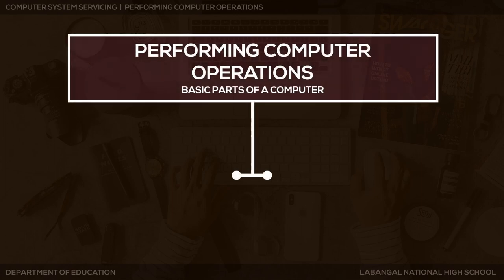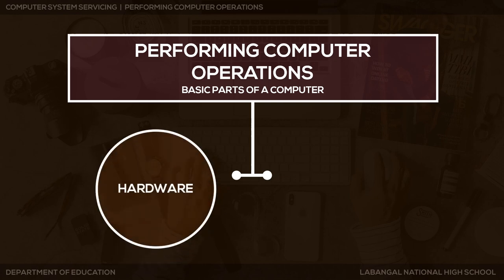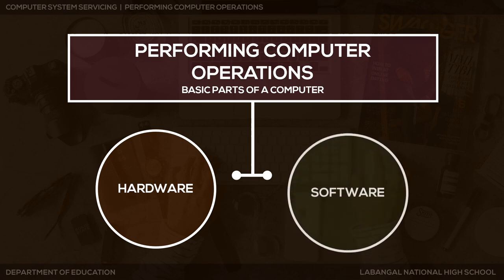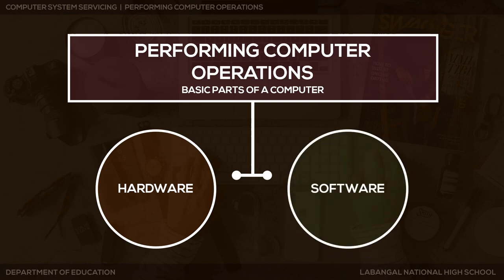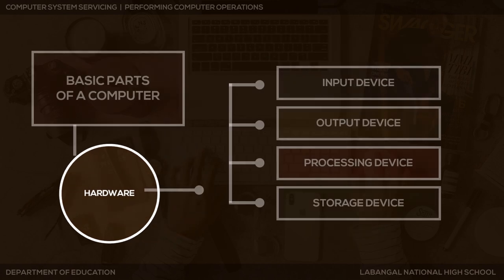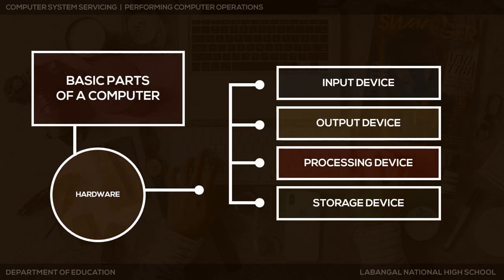In performing computer operations, we first need to know the basic parts of a computer. Under hardware, we have four different classifications: input device, output device, processing device, and storage device.